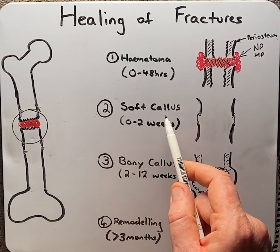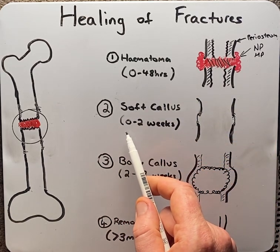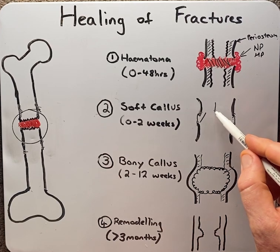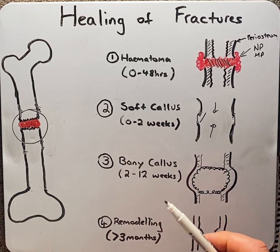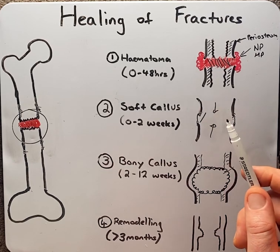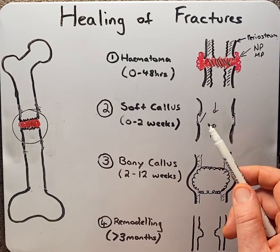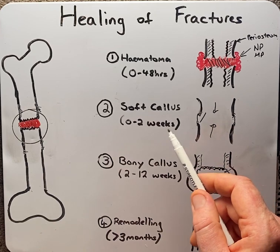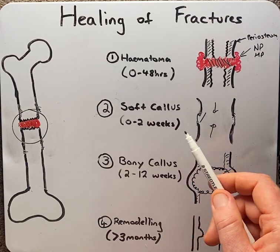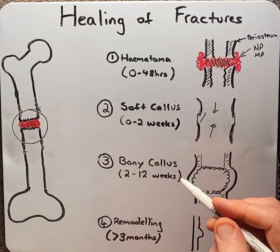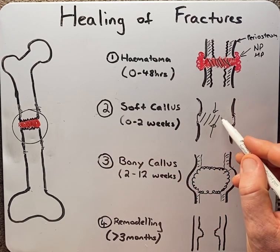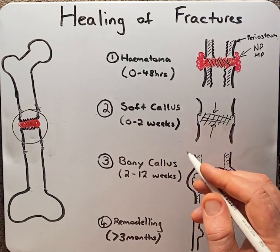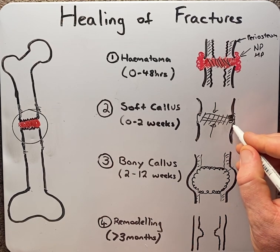In the second stage, which is known as the soft callus stage, occurring from zero to two weeks, platelets and white blood cells come in and release certain growth factors, such as PDGF and FGF, which causes the proliferation of bone cells and chondrocytes. By the end of the first week, the soft callus phase is well underway. This is also sometimes known as the pro-callus stage. Osteoblasts lay down woven tissue, also known as osteoid or an organic tissue, and chondrocytes lay down some cartilage.